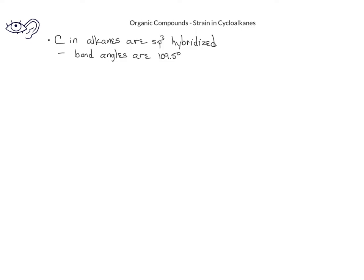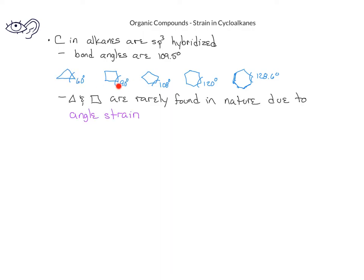This leads to some interesting consequences for what kinds of cyclic alkanes will be found in nature. If we look at a cyclopropane, the angles will be about 60 degrees. In a cyclopentane, the bond angles will be about 108 degrees. And in cyclohexane, the bond angles will be about 120 degrees. For a cycloheptane with seven carbons, we'd expect a bond angle of 128.6 degrees. Given these angles, there's a significant mismatch between what's expected in an sp3 hybridized carbon and what we see in many of the cycloalkanes that we've talked about here. In fact, cyclopropanes and cyclobutanes are rarely found in nature due to a phenomenon called angle strain. Angle strain results from an angle that is very different from the expected 109.5 degrees.